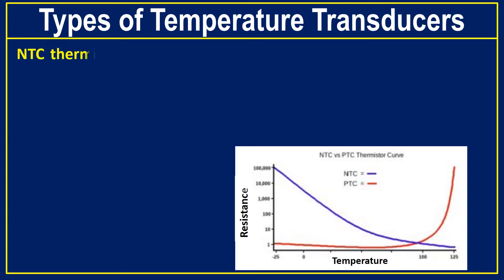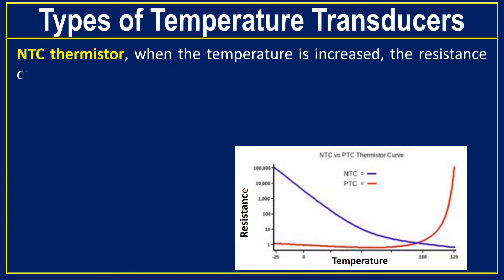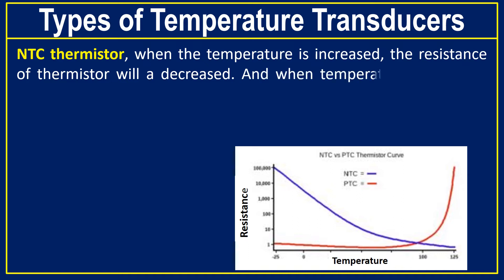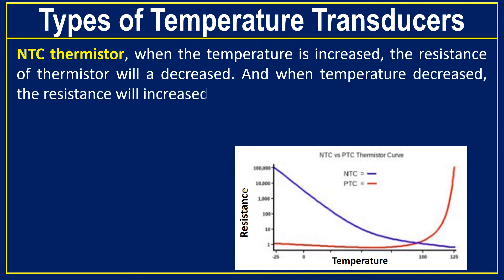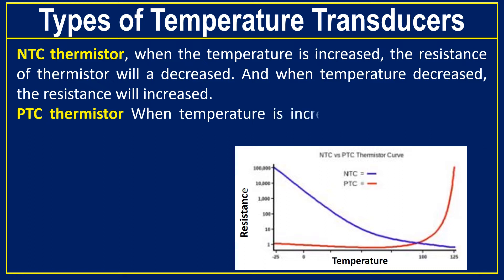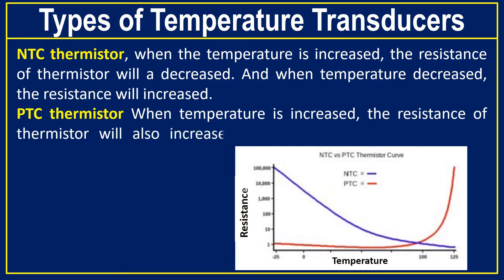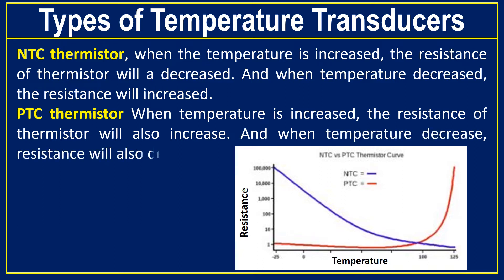In an NTC thermistor, when the temperature is increased, the resistance of the thermistor will also increase. When the temperature decreases, the resistance of the thermistor will increase. While in a PTC thermistor, when the temperature is increased, the resistance will also increase, and when the temperature decreases, the resistance will also decrease.